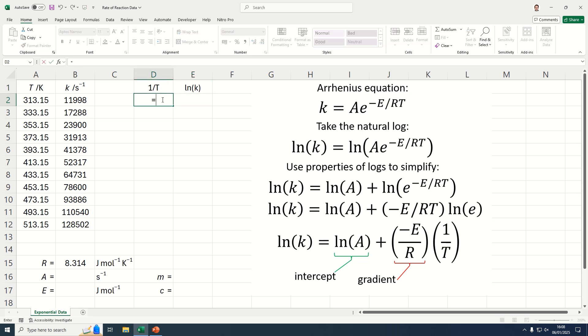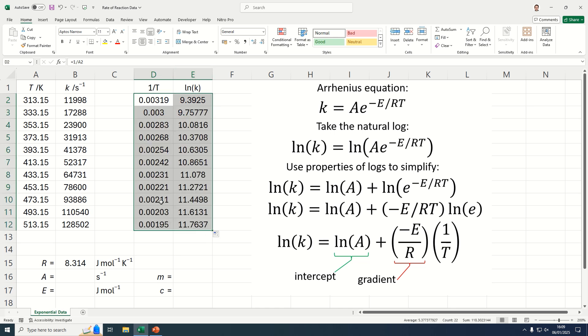So we simply write equals, select that cell, or rather we need to do 1 divided by and then we select that cell. And then here for the Excel function we just use LN, open brackets, click on the value, close the brackets. And then we can simply drag that down and we get the values that we need.